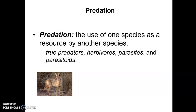True predators include things like coyotes, the great horned owl, and humans. We're all true predators, or can be.